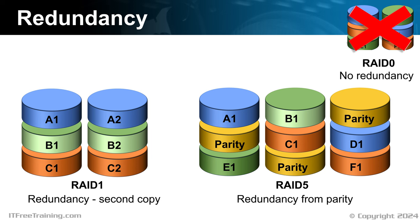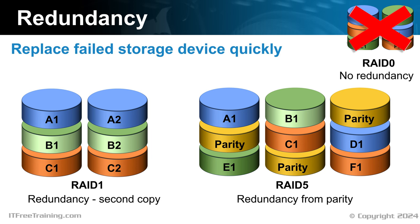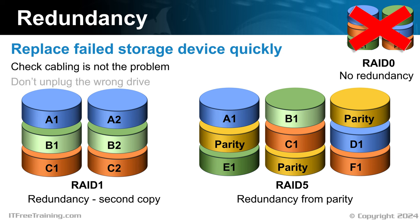If you have a storage device fail in a RAID, you should replace it quickly. Before you do so, make sure you check that cabling is not the problem. If a cable comes loose from a storage device, the RAID may think the drive has failed and this can cause the RAID to get out of sync, requiring a rebuild. When replacing a storage device, make sure you don't unplug the wrong one, as you risk the RAID controller thinking the device has failed and you may lose all the data in the RAID.